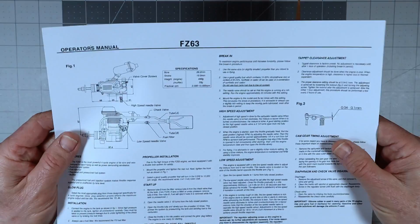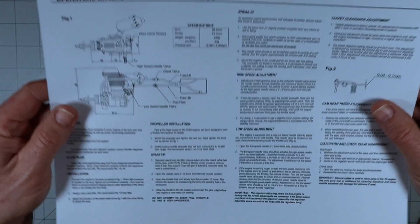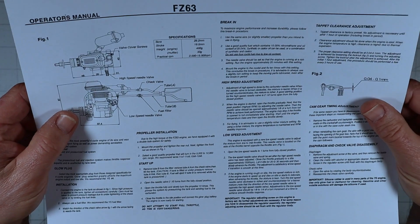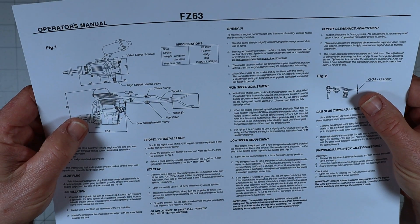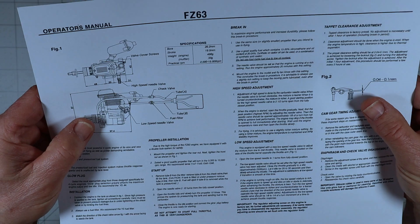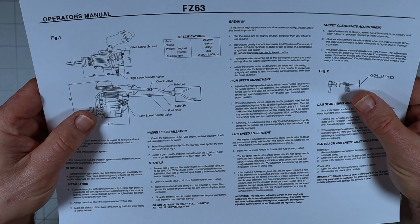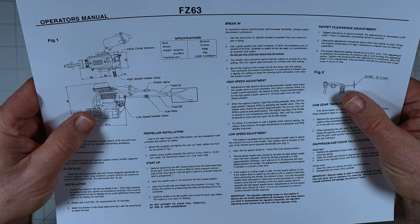So let me read what this instruction says here for startup. It says remove tube B from the filler, remove tube A from the check valve, then fill the tank. Yeah, they want you to, well, that's just to fill the tank.